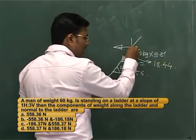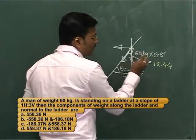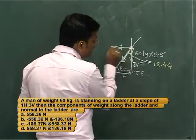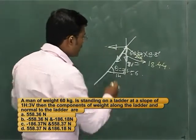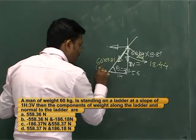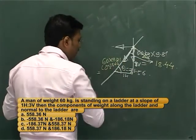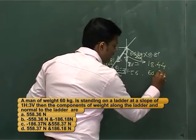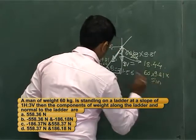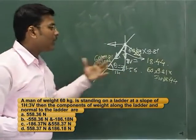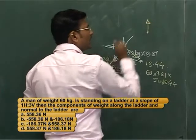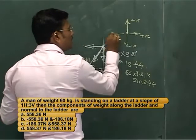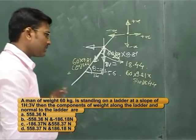As we discussed, the weight component acting downward should be resolved into two directions — one along the ladder and one normal to the ladder. The angle with respect to the vertical is given, so the component along the ladder is the cos component and normal to the ladder is the sine component. Along the ladder: 60 × 9.81 × cos(18.44). Normal to the ladder: 60 × 9.81 × sin(18.44). For sign conventions — upward is positive, downward is negative; right is positive, left is negative.